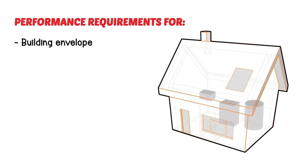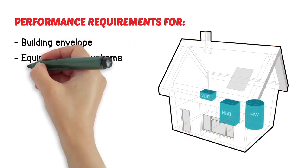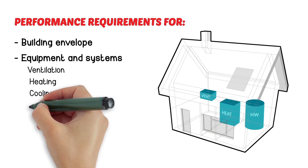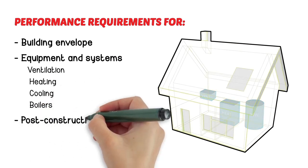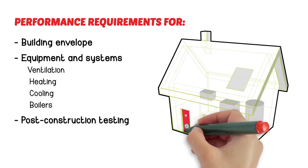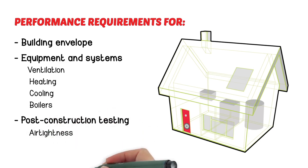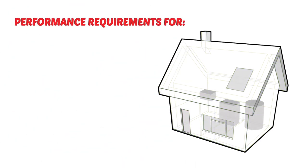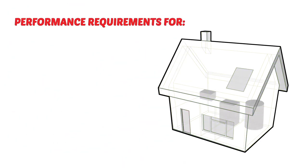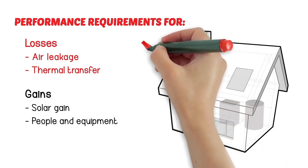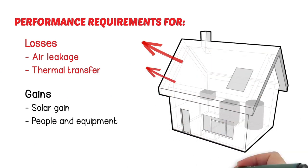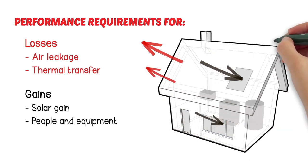On Sam's new house, it will measure the performance requirements for the building envelope, equipment and systems such as ventilation, heating, cooling, and boilers, and post-construction testing, using a blower door test to confirm air tightness. It also identifies the building envelope efficiency metrics. Envelope means the physical barrier between the interior and the outside world, such as walls, roof, floors, windows, skylights, and doors.